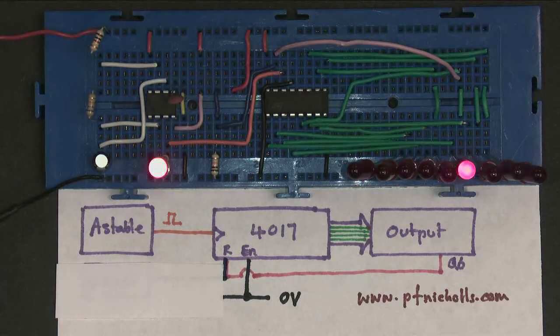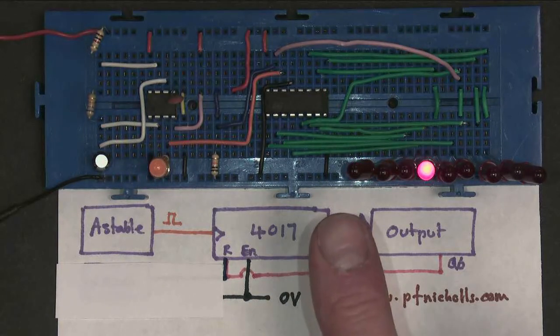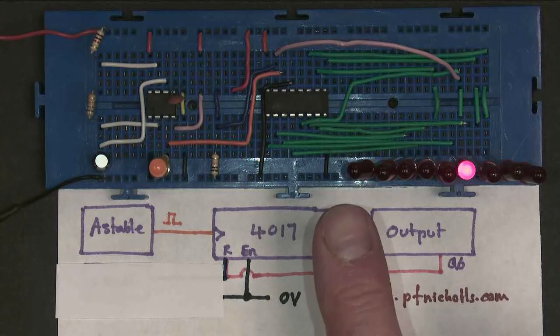And now you can see what's happening is that my counter, instead of being a 10 output counter, is now a 6 output counter.